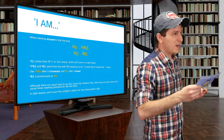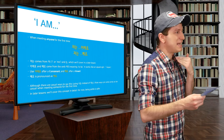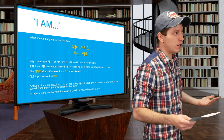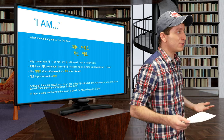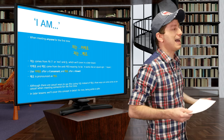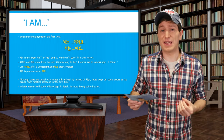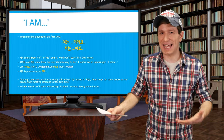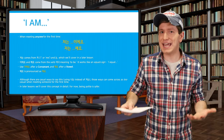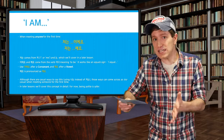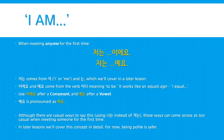저는 comes from the word 저, meaning I or me, and 는, which is called the topic marker — we'll have a lesson about that in the future. So it literally means 'as for me.' 이에요 and 예요 come from a verb called 이다, which means 'to be,' and it works like an equal sign. You'll use 이에요 after a consonant, or 에요 after a vowel — note that 예요 is actually just pronounced as 에요.